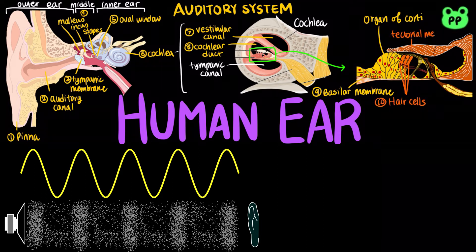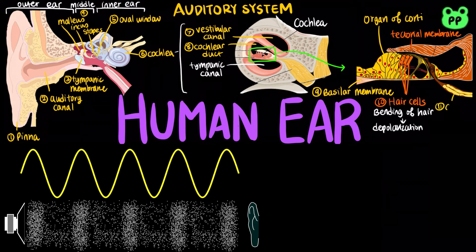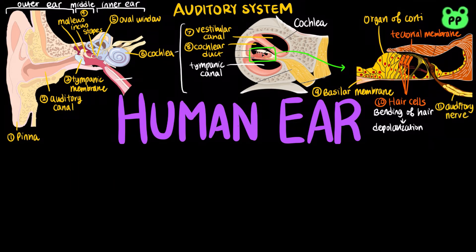Many of the hairs are attached to the tectorial membrane. Pressure waves in the canal cause the basilar membrane to vibrate, bending its hair cells. This bending of hair cells depolarizes the membranes of mechanoreceptors and sends action potentials to the brain through the auditory nerve.